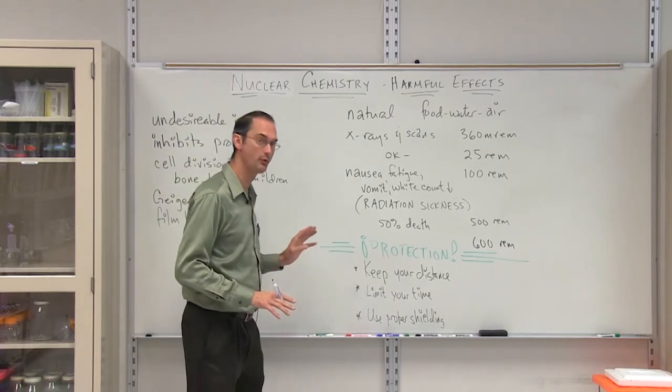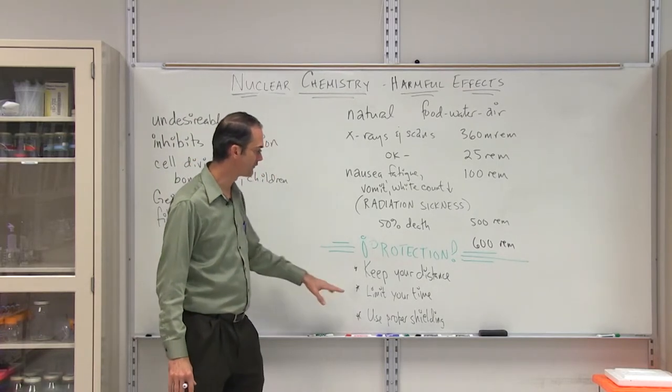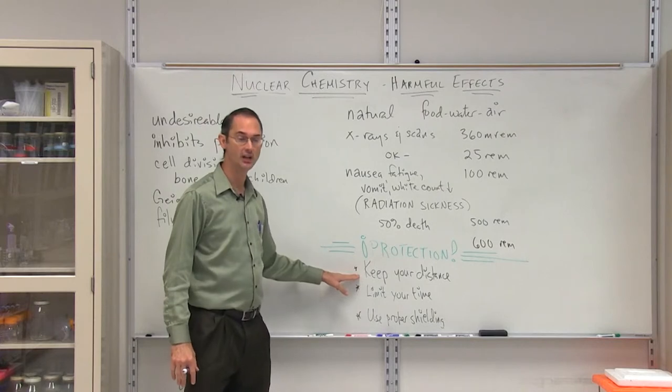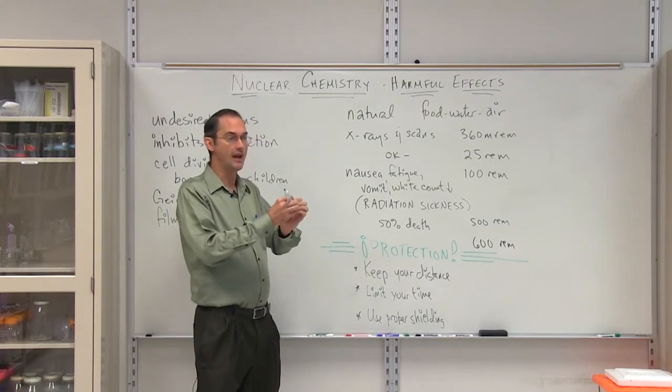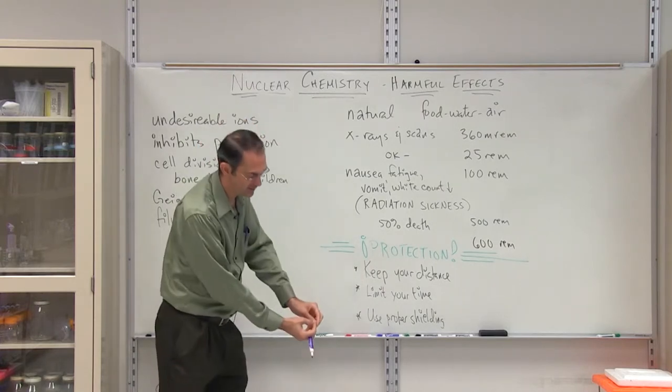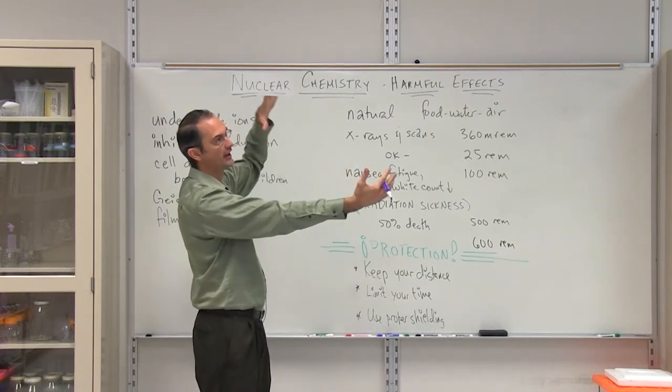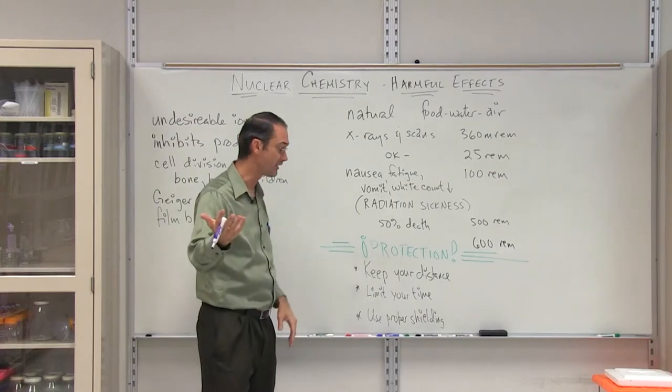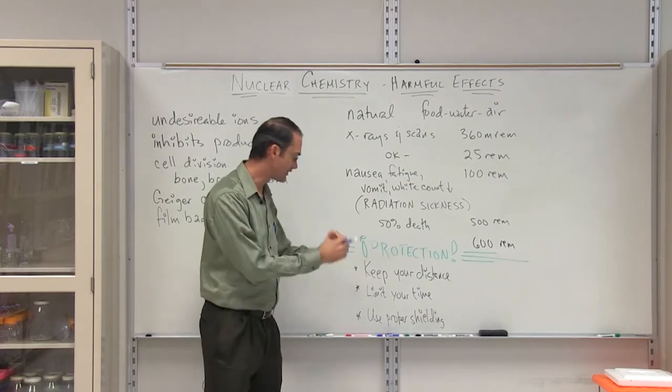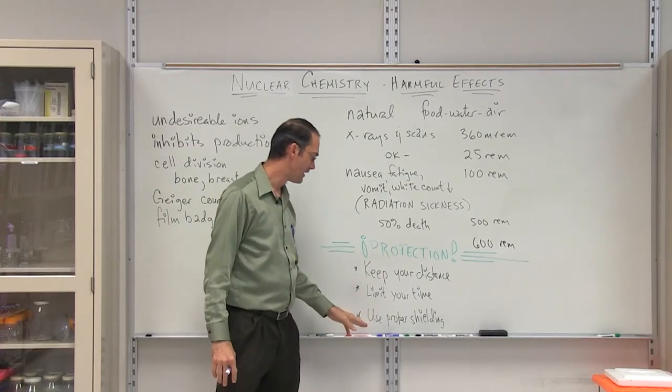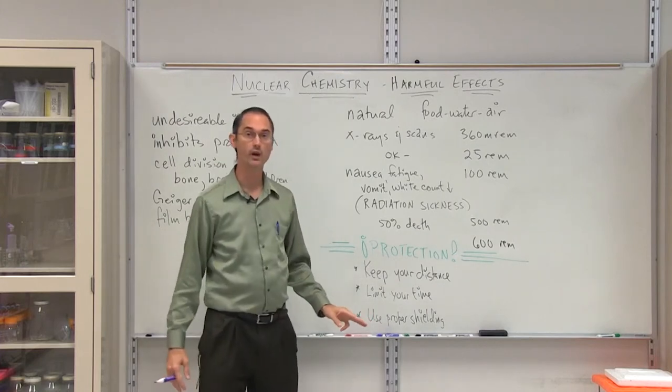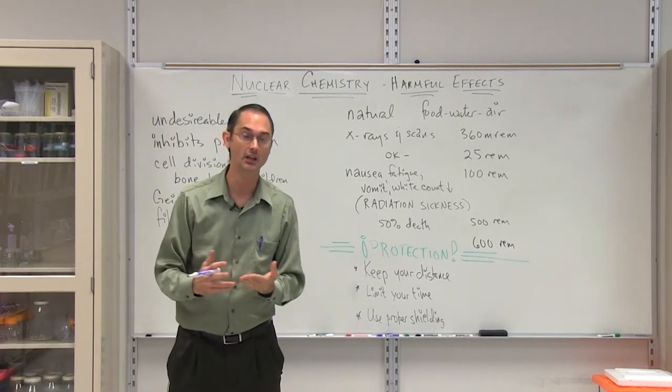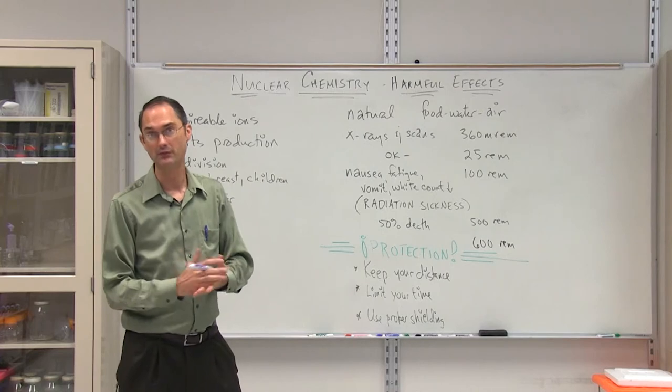Finally, the protection. There are three ways that you can deal with protection. First of all, of course, is to keep your distance because radiation, just like in a bike, the spokes go out radially. The idea is that the radiation goes out radially from the nucleus that's in decay. So keep your distance is important. Limit your time, and as well, use the proper shielding, whether that's going to be behind concrete or behind lead of some type.